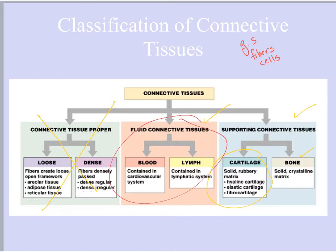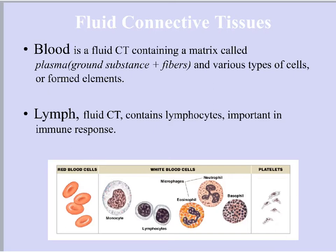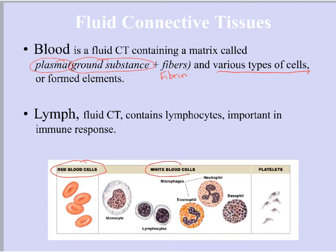Let's go ahead and start off with fluid connective tissue. Blood is considered a connective tissue because it has ground substance, fibers, and cells. One of the big differences though with blood is the ground substance is very watery. The ground substance in blood is what we call plasma, so it's much more fluid than it would be in a connective tissue proper. The fibers present are fibrin — those fibers that are responsible for clotting — and then there will be various types of cells: red blood cells, a variety of white blood cells, and parts of cells called platelets.